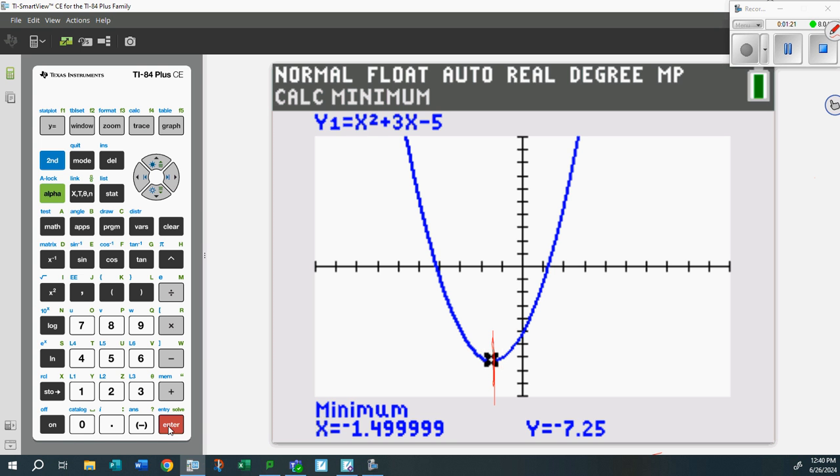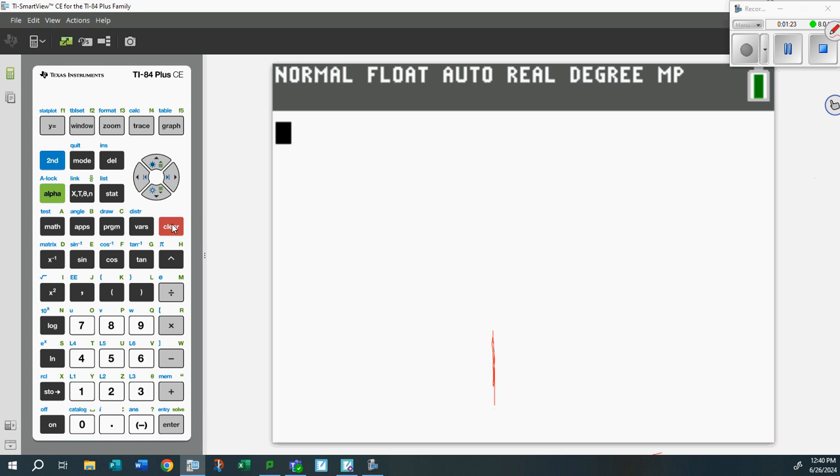How do you figure that out? Real simple - hit CLEAR, hit X, hit =, and there's -1.499999876 and so on. This is the calculator rounding. All you have to use is -1.5.